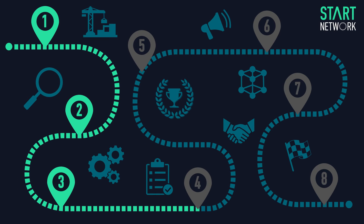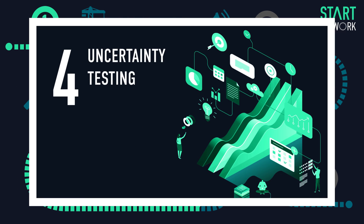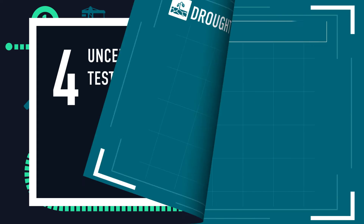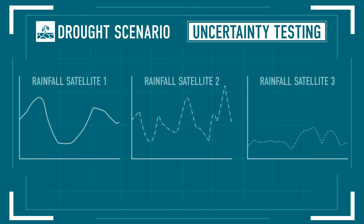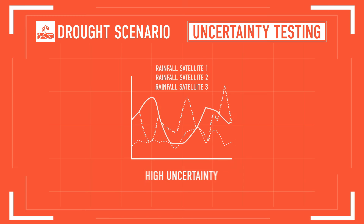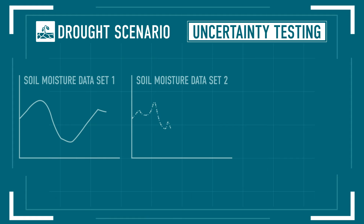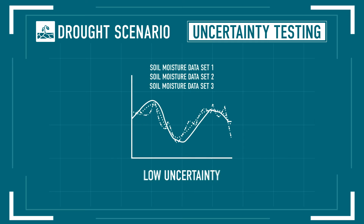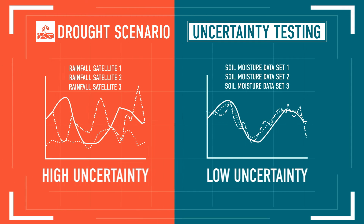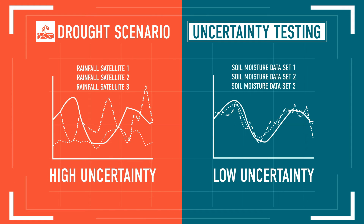Checkpoint 4: the data providers can now complete the first set of testing. Uncertainty tests should be a comparison between different datasets to examine whether they agree or disagree with each other. This will reveal the level of uncertainty across the DRF system being built, and the influence of external conditions on potential basis risk.